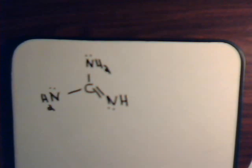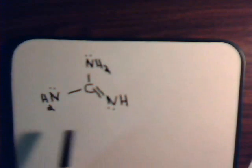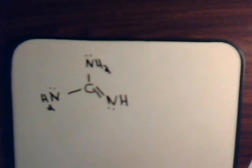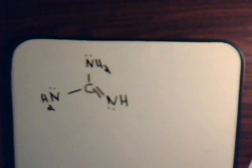Let's look at guanidine. This is one of the most basic organic compounds there is — a very strong basic compound. To completely understand why, we see we have all these nitrogens here, so that would lead us to believe that it would definitely have basic properties. But to understand why it's so powerfully basic, we have to take a closer look at its structure and at the different resonance forms that can be allowed.